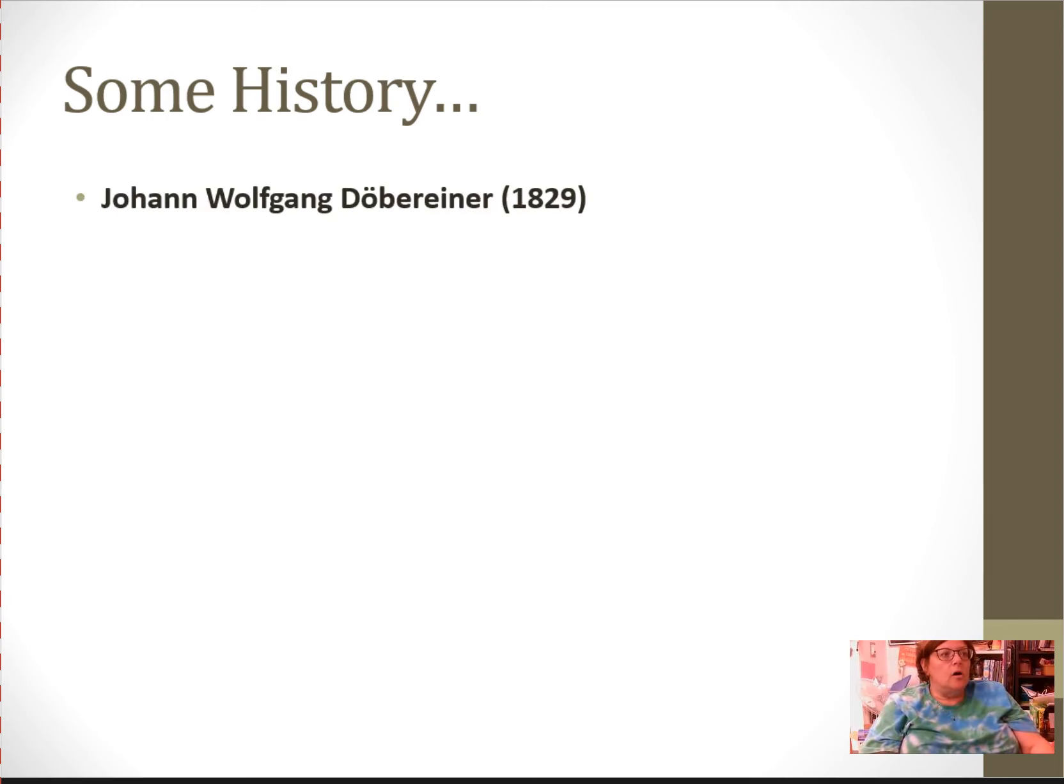We're going to start with some history of the periodic table. First of all, Johann Wolfgang Döbereiner in 1829 sorted elements into triads based on similarities. Sorted elements into triads, that's groups of three.